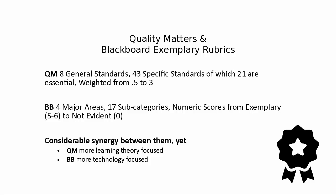Those two standards are: first, the Quality Matters exemplary reviews, based on eight general standards with 43 specific substandards, of which 21 are considered essential, weighted from 0.5 to 3 points in the rubrics. And the other is the Blackboard exemplary standard, which has four major areas, 17 subcategories, and numeric scores ranging from exemplary to non-evident. Feel free to explore those online by searching either Quality Matters or Blackboard exemplary rubrics.